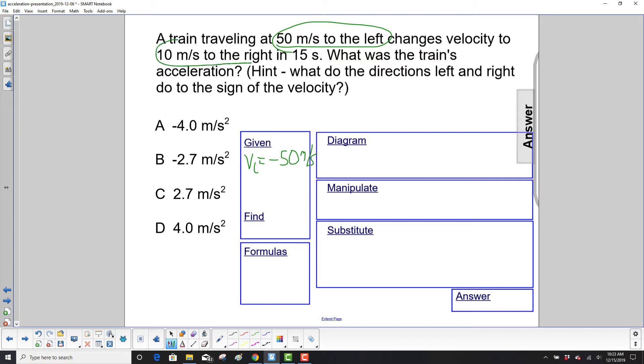It then changes to 10 meters per second to the right. So v final is going to be 10 meters per second to the right. And that's a positive. So let's put the positive in there just to remember it. And our time is 15 seconds.